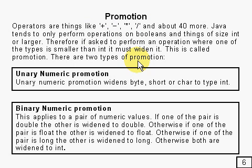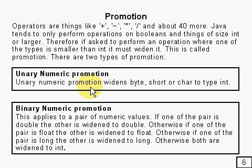And there are two types. There's something called unary numeric promotion, whereby if it's a byte, a short, or a char, it's widened to type int. Because you can do that — you're pushing it up a tree diagram of types.